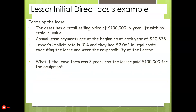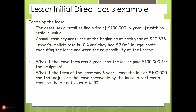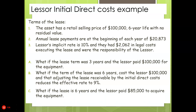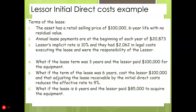We're going to do three examples. What if the lease term was three years and the lessor paid $100,000 for the equipment? What if the term of the lease was six years, cost the lessor $100,000, and adjusting the lease receivable by the initial direct cost reduces the effective rate to 9%? And what if the lease is six years and the lessor paid $85,000 to acquire the equipment?